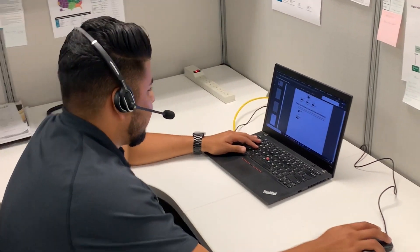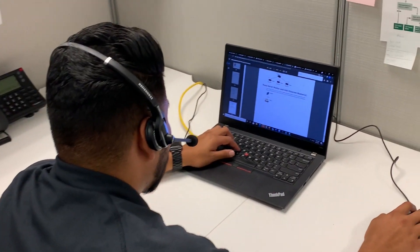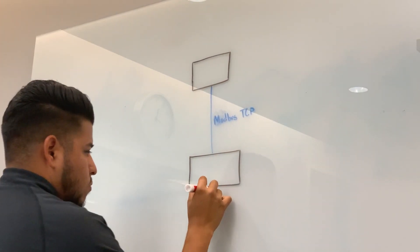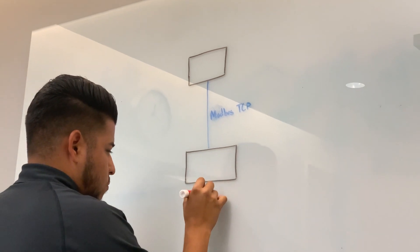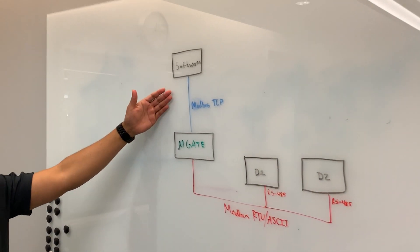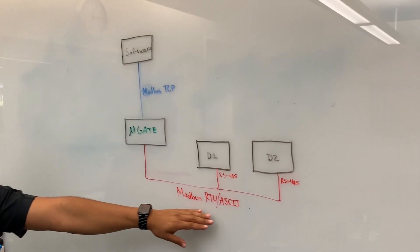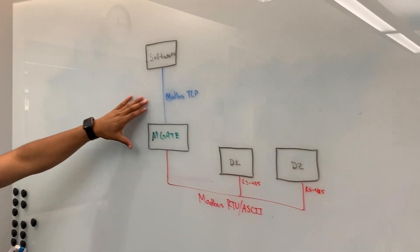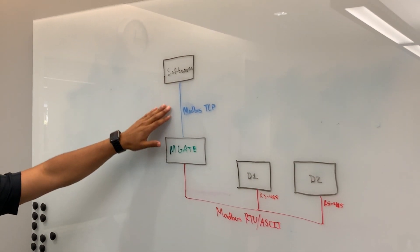The customer was looking for a Modbus gateway to replace because his original one was discontinued by its manufacturer. The protocols being converted were Modbus TCP to Modbus RTU. On the TCP side he has software collecting data, and on the Modbus RTU side were all the serial devices he was collecting data from.